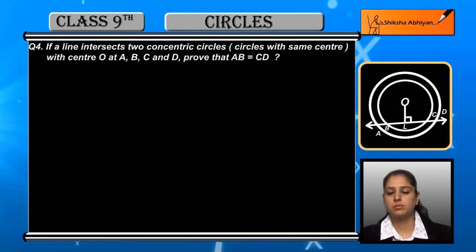We have to prove that AB and CD are equal. Let us see how. First we will carry out a construction. We have to draw a perpendicular from O to line L.